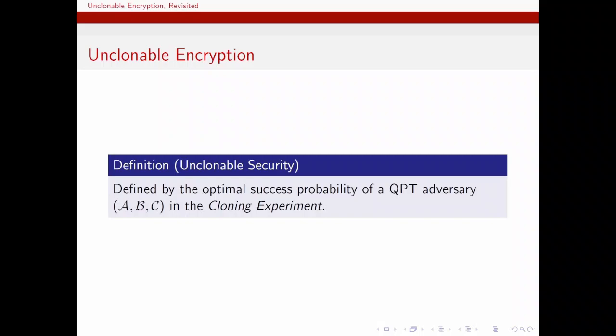So, how do we define unclonability in this setting? It is defined by a security experiment, which we will call the cloning experiment. And the maximum attainable success probability in this experiment by a polynomial time triplet adversary, which I will refer to as Alice, Bob, and Charlie, will give us the security parameter as it relates to unclonability.